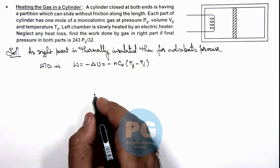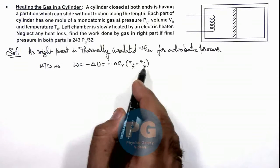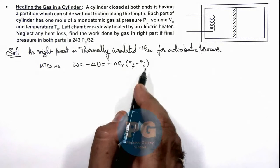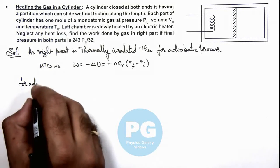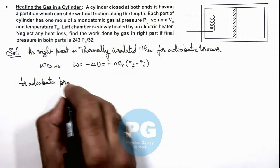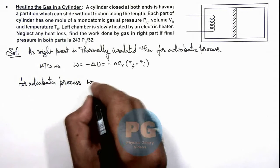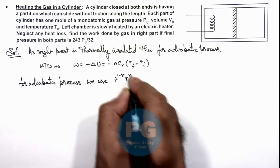So to get the temperature values at final and initial instants, we relate the pressure and temperature. We can write for adiabatic process, we use p to power (1 minus gamma) times T to power gamma is a constant.